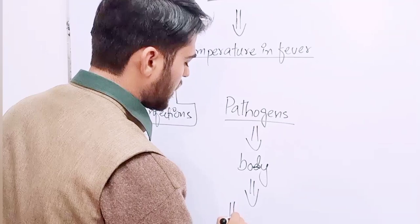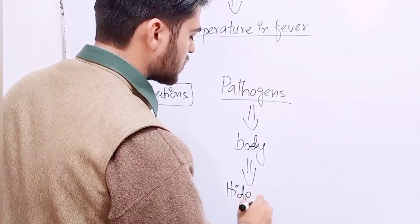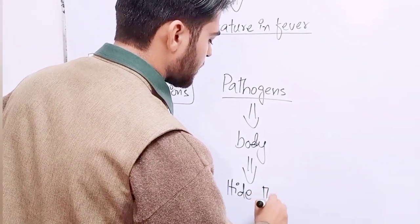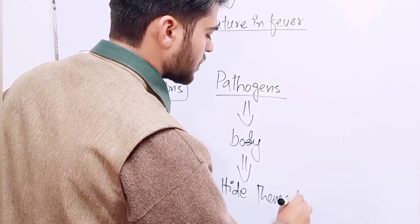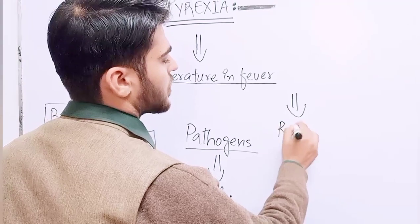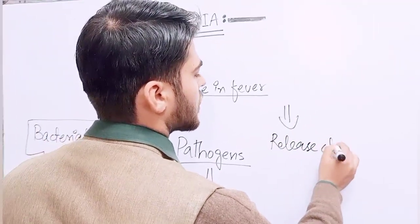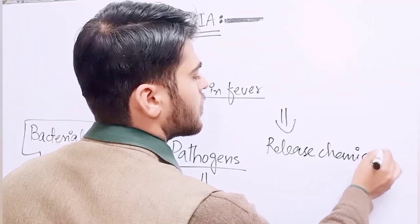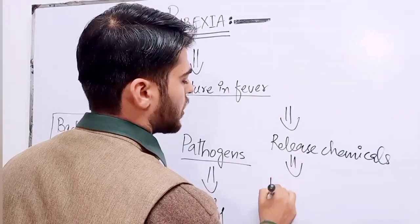Wo apne aap ko chupa lete hain taa ke immune system unhein kill na kar sake. They hide themselves and release chemicals. Chemicals release kerte hain jinko hum kehethe hain pyrogens.